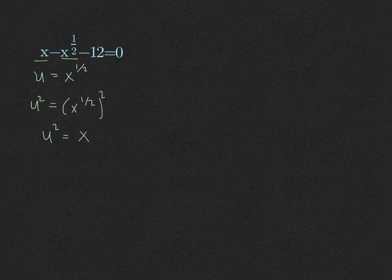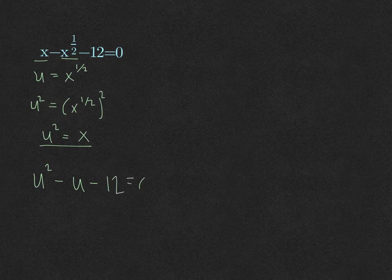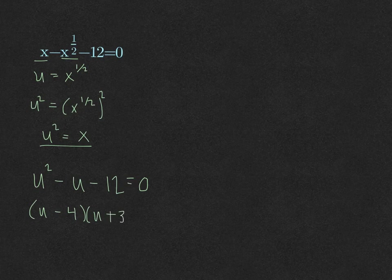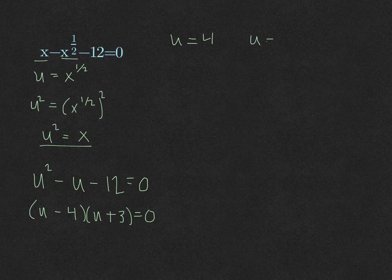We do the substitution: since x equals u squared, we have u squared minus u minus 12 equals zero. Now we have a quadratic equation. Factoring: the factors of 12 are 4 and 3, giving (u minus 4)(u plus 3) equals zero. So u equals 4 and u equals negative 3.